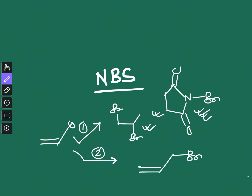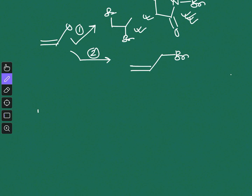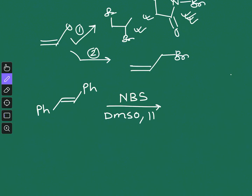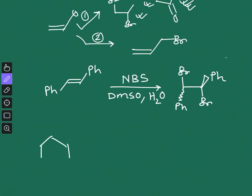In both cases the main reagent is NBS, but what varies is the reaction condition and the solvent. Depending on the reaction condition and the solvent, you can get either outcome — bromine adds across the double bond or substitution occurs at the allylic position. For example, with styrene reacted with NBS in the presence of DMSO and water, you get addition across the double bond. Since there is no allylic position in styrene, there is no surprise there.